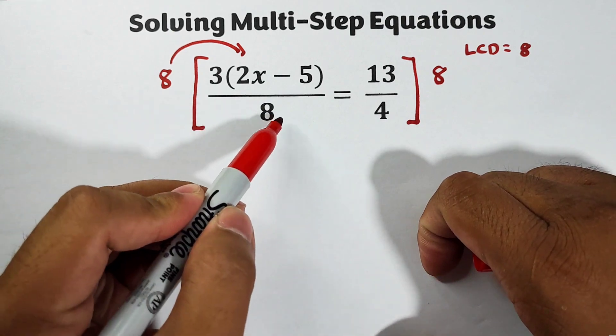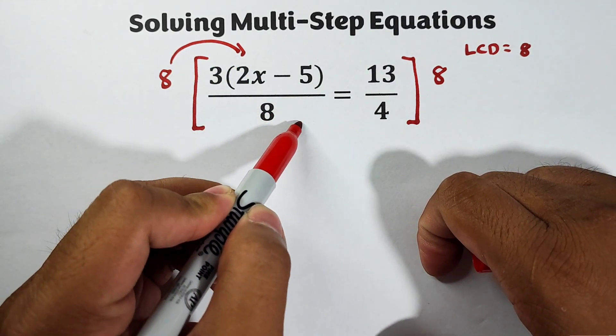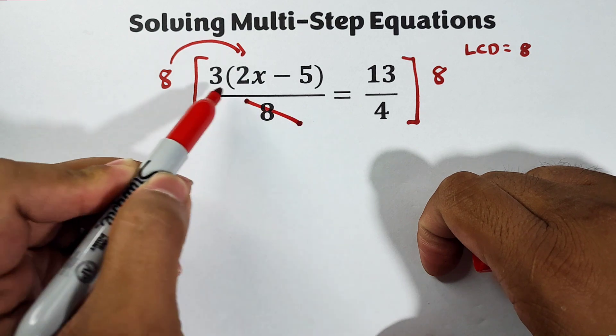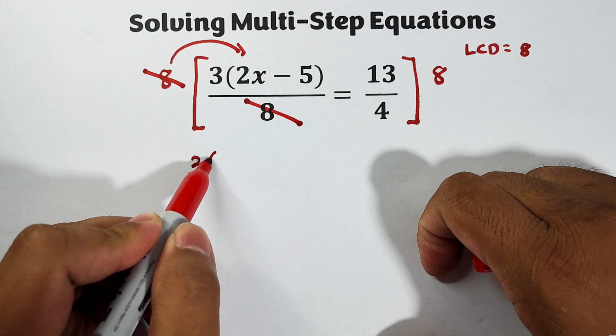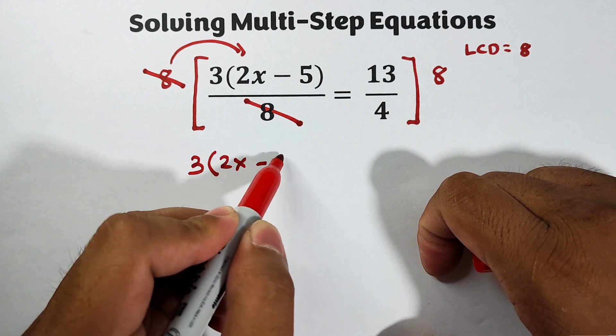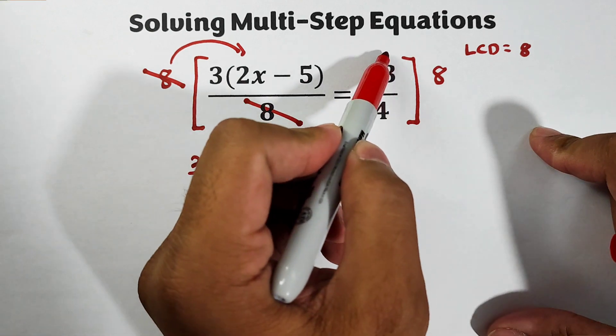This one is a single term, so what will happen here is that when we multiply 8 by this term, we just need to cancel out this 8 and 8, and what will remain is 3 times 2x minus 5.